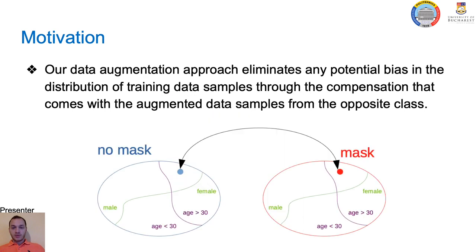One cause for weak performances of neural networks could be any potential bias in the dataset. A model might consider features specific to other tasks which are easier to learn rather than features for the desired task. Our data augmentation approach eliminates any potential bias in the distribution of training data samples through the compensation that comes with the augmented data samples from the opposite class. In our case, training samples belonging to one class may have different gender and age distribution than the training samples belonging to the other class, among other unknown biases. Instead of finding relevant features to discriminate utterances with and without masks, a neural network might consider features for gender prediction or age estimation, which is undesired.